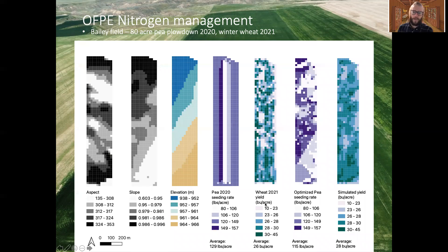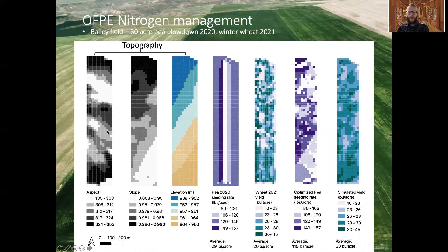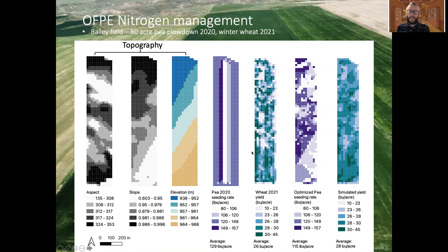This shows all the variables that go into the model construction for the 80-acre piece. First, we have topographic variables — these stay spatially consistent year in, year out. Aspect shows that this field generally slopes toward the north. Slope starts with a gentle gradient but gets steeper moving toward the low area in the north. Elevation shows the field is higher in the south and lower in the north. All of that goes into the model. The important part is where we vary the seeding rate: in 2020, pea rates were varied across the entire field to understand how the following crop would respond. In 2021, we see the wheat yield in bushels per acre.